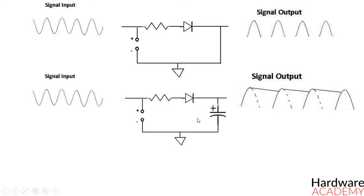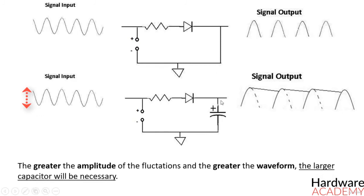When choosing a smoothing capacitor, an electrolytic capacitor is used from anywhere from 10 µF to a few thousands of µF. The greater the amplitude of the fluctuations and the greater the waveform, the larger capacitor will be necessary.